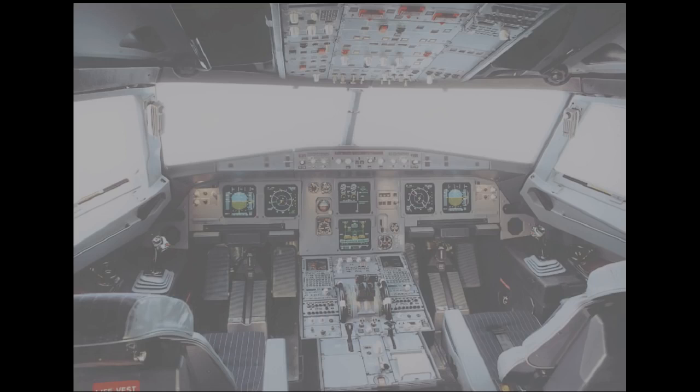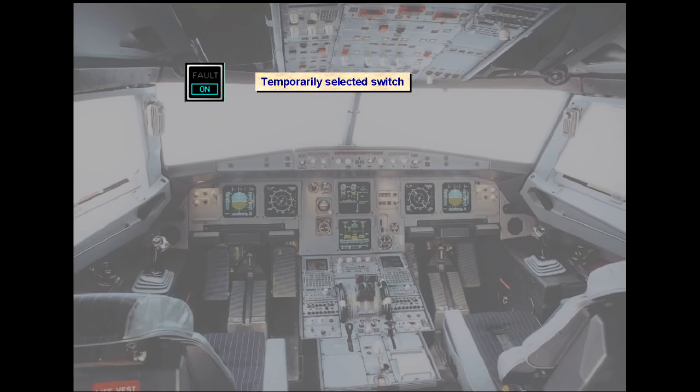There are some switches on the overhead panel which are used on a temporary basis or may have an indication of their state. The logic is: temporary selection for operational reasons — blue on light, such as anti-ice; applicable system status — green light, such as APU available.